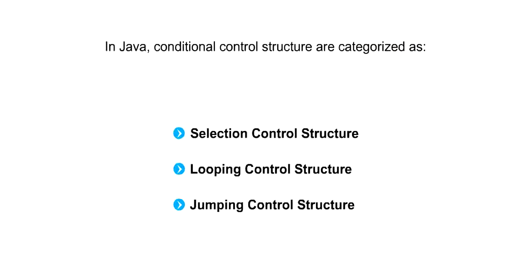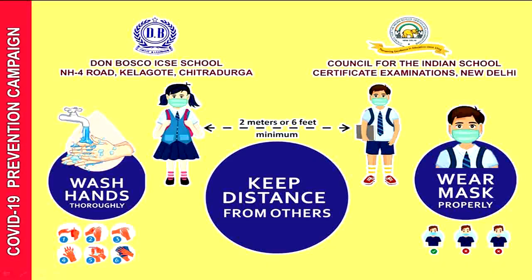We discussed decision control structures in Java. Conditional control structures are categorized as selection control statements — these include if statement, if-else statement, and if-else-if ladder. The second category is looping, and the next is jumping control statements — break is one type of jumping control statement. Please go through all the programs and the text thoroughly, compare with the programs in the textbook, and if possible try them on a computer using BlueJ software. Practice well to understand. Don't forget to wash hands thoroughly, keep distance from others, and wear your mask properly. Thank you.